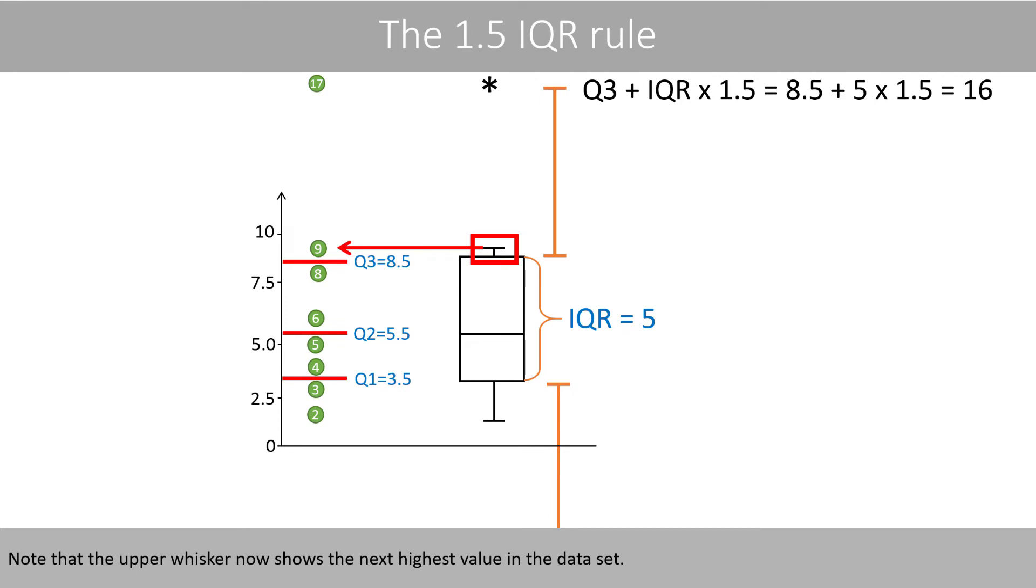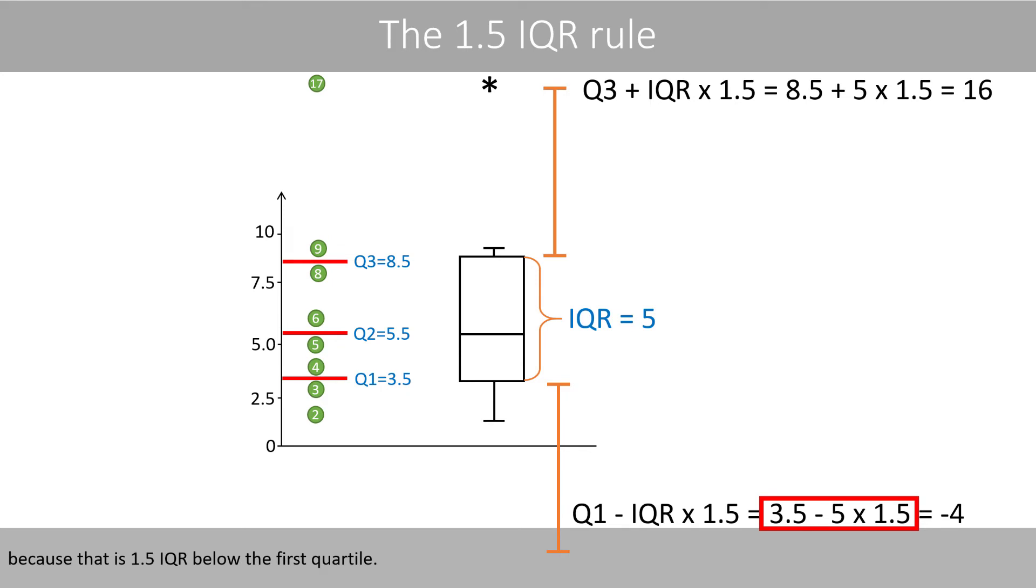Note that the upper whisker now shows the next highest value in the dataset. The corresponding lower threshold for outliers is here negative 4, because that is 1.5 interquartile range below the first quartile.